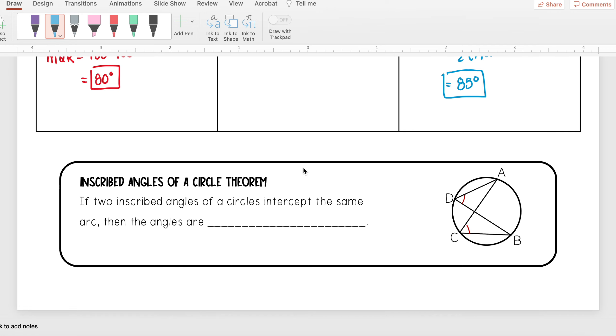Now we get to the inscribed angles of a circle theorem. This theorem tells us that if two inscribed angles of a circle intercept the same arc, then the angles are congruent.